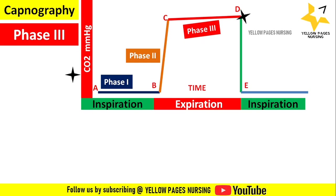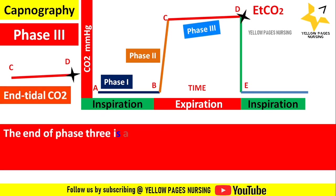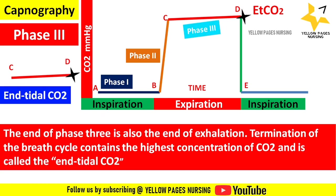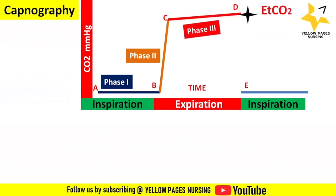Point D marks the end of phase 3 and indicates end-tidal CO2. The end of phase 3 is also the end of exhalation — the termination of the breath cycle — and contains the highest concentration of carbon dioxide. Next comes phase 4, which is the descending phase from D to E.